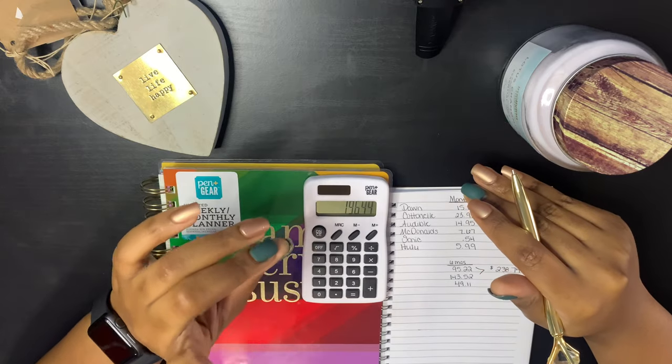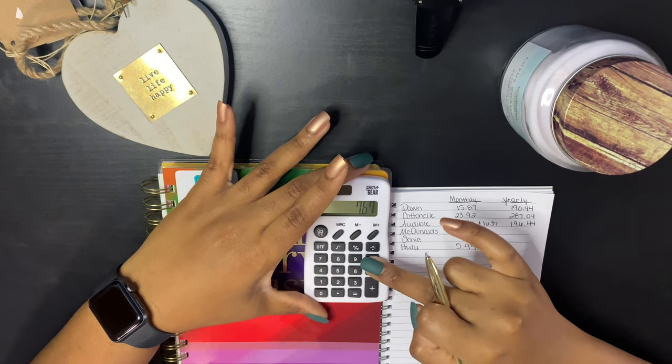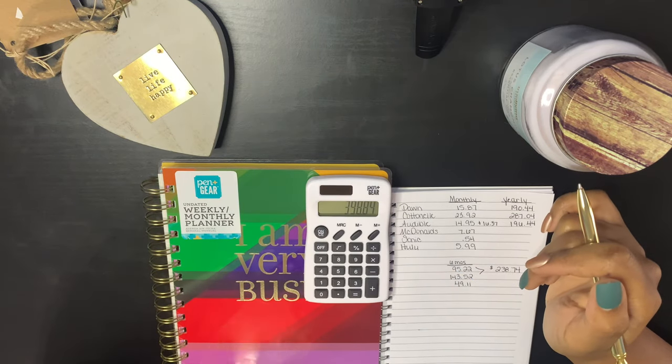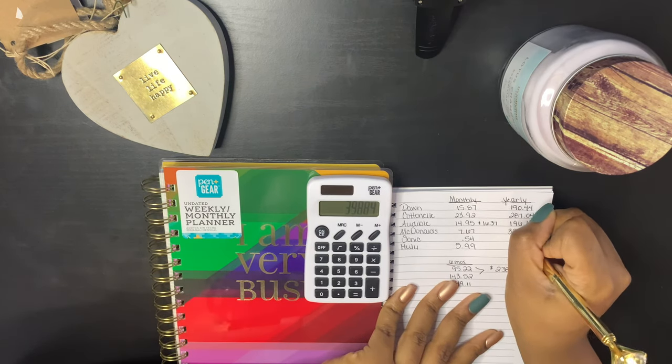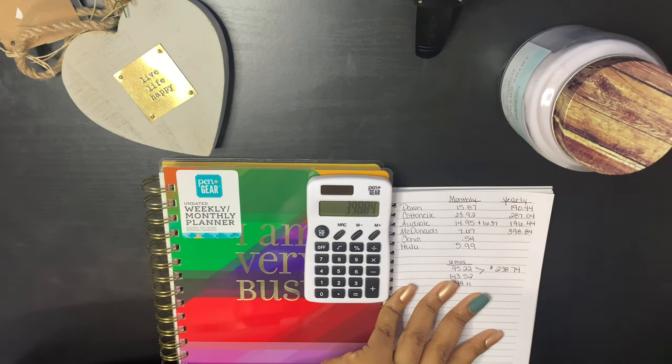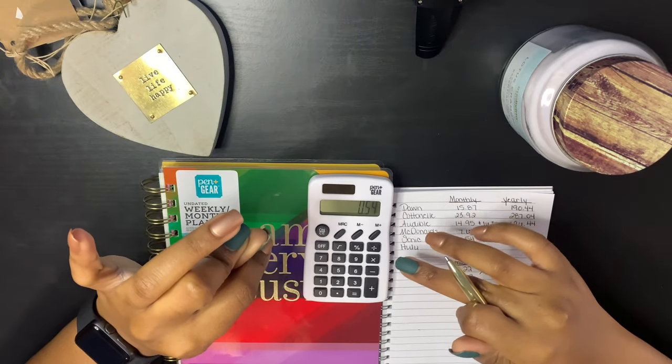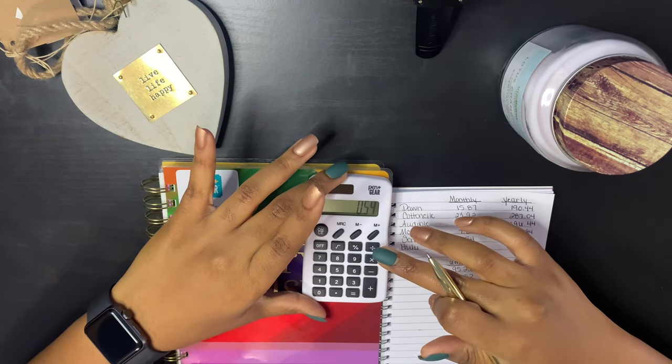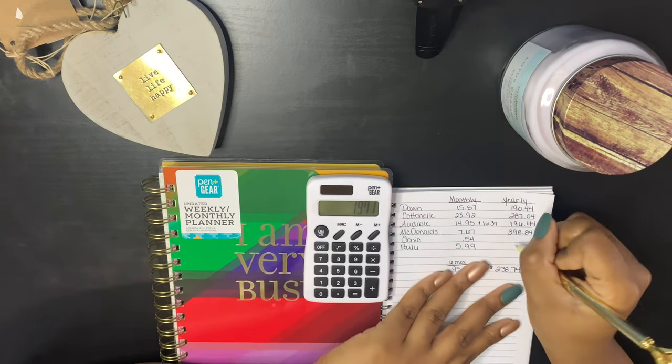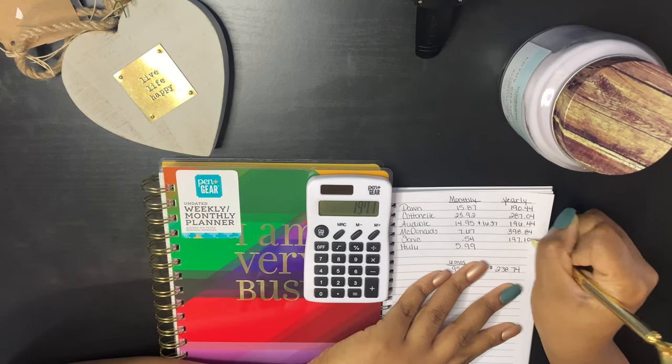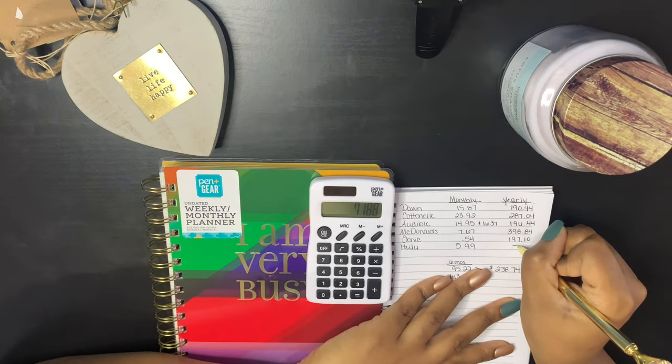Okay, McDonald's I'm gonna do 52 weeks, you know, and that can be give or take some. $7.67 times 52 equals, it's 52 weeks in a year right? Oh no baby, $398.84. You have to be kidding me. Oh wow. So now we're gonna do Sonic, that's 54 cents. Oh wow. Every day times 365 days, it's $197.10. Hulu, $5.99 times 12 equals $71.88.